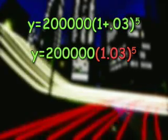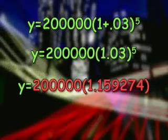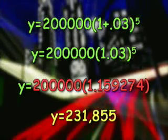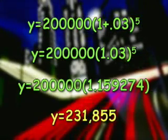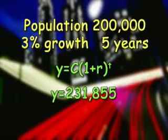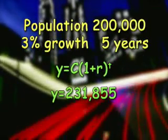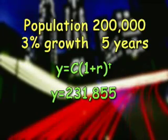Then raise that to the fifth power, which is 1.159274. Then multiply by 200,000, with the result after rounding 231,855. The town can project a population of 231,855 in five years.